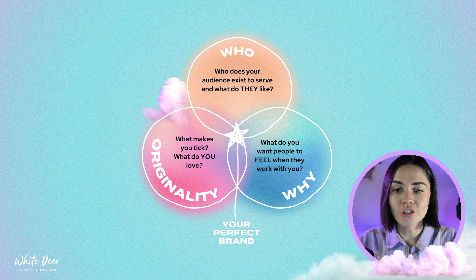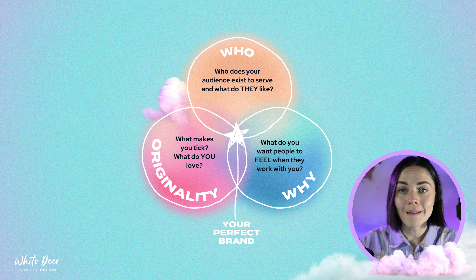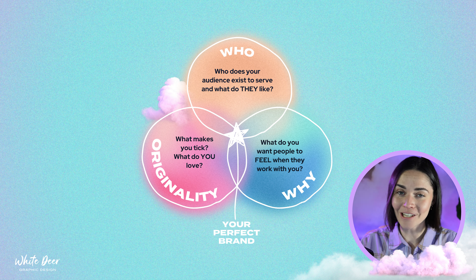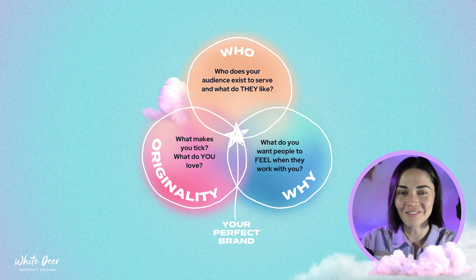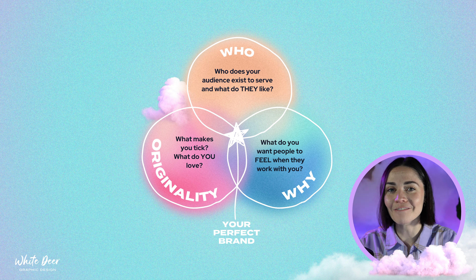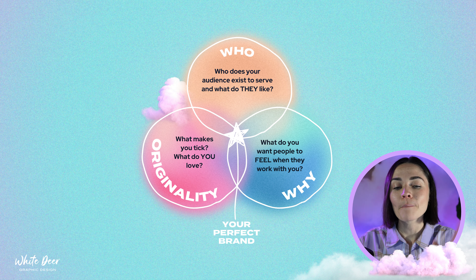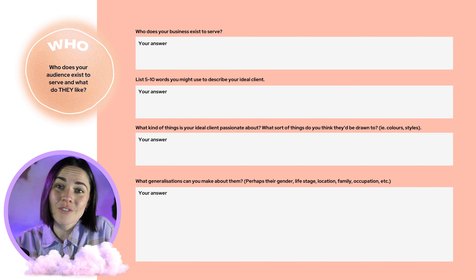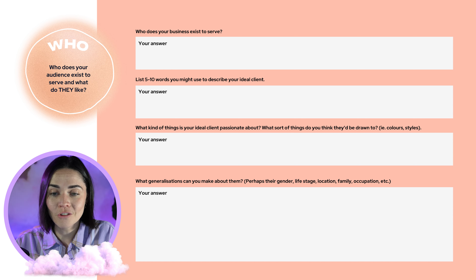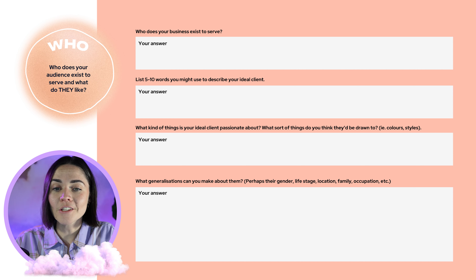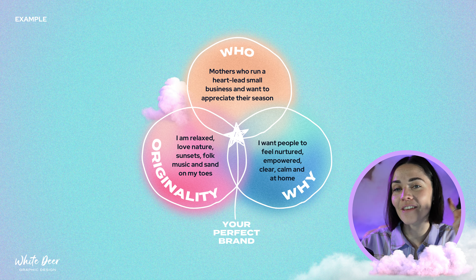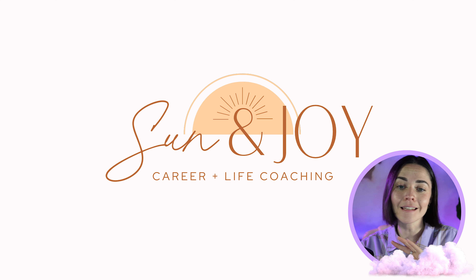The WOW model helps you work out what your brand should look like. There are three circles: your Who, your Originality, and your Why. Think through who does your business serve, what makes you unique and original, and how you want people to feel when they work with you. The perfect culmination of those three things is your perfect brand. There's a whole 20-minute video explaining this, but the worksheet I'm giving you has three pages that help you think through those questions and build clarity.